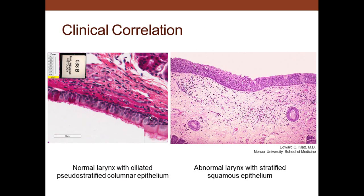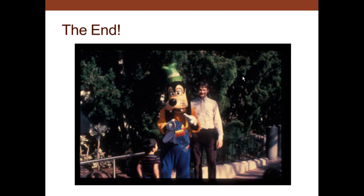In terms of clinical correlation, the normal larynx has respiratory epithelium with ciliated cells. However, in a smoker or in certain cases, it undergoes metaplasia to stratified squamous epithelium. The problem is that stratified squamous epithelium doesn't have cilia to move mucus out, which is why a smoker has to cough out mucus — the natural mechanism of moving mucus with ciliated cell action has been compromised. The mucus is still produced but must be expelled by coughing rather than by normal mucociliary clearance.